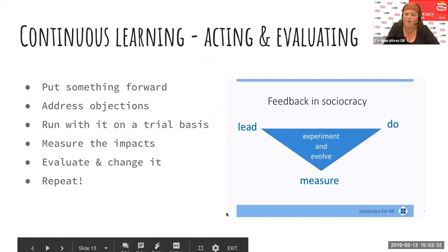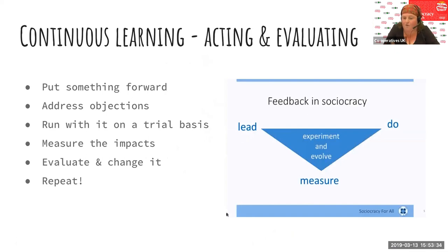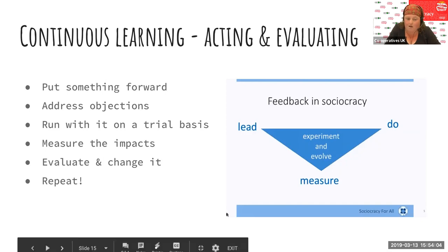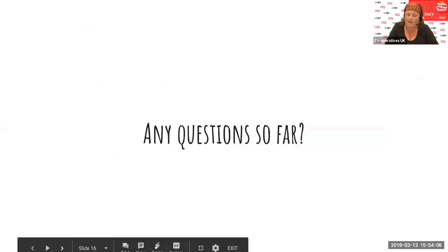This is another way of phrasing experiment and evolve: lead, do, measure. Put something forward, address any objections, try and run with it on a trial basis. All good sociocratic decisions come with a timeframe. If it's not that safe to try and you're really not sure, it might be just four or five, six weeks. Or it could be something you're going to review in three years' time. But you always want to put a timescale in there so you know when you're going to come back and measure how well it's worked, evaluate, change it if you need to, and repeat.